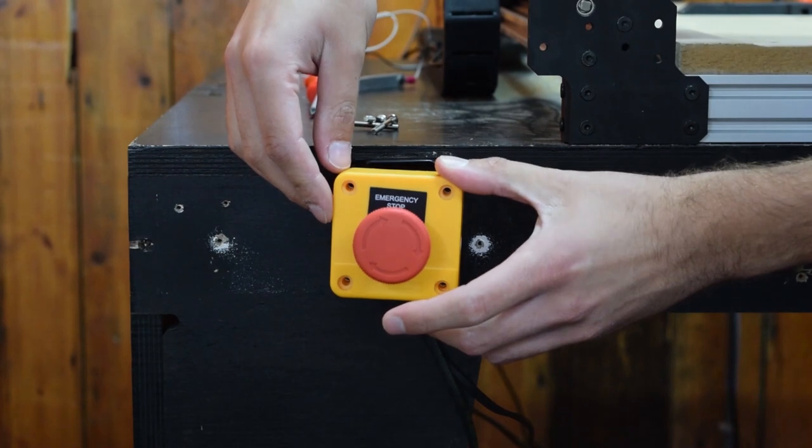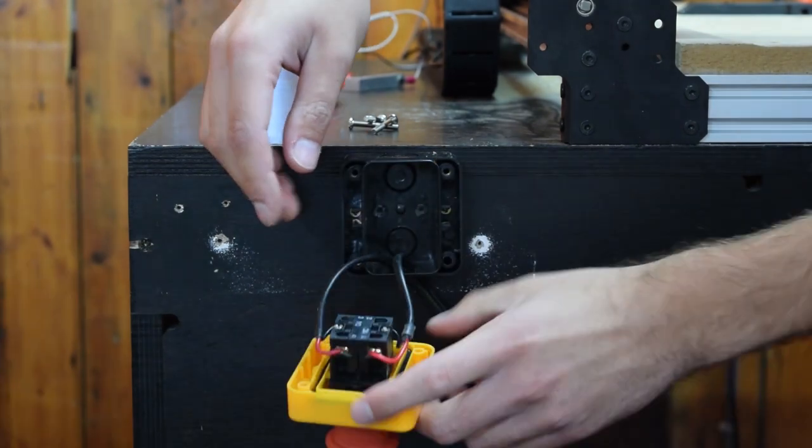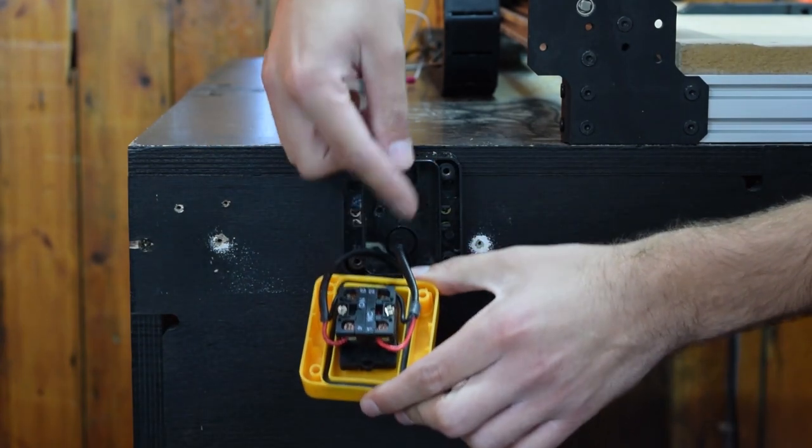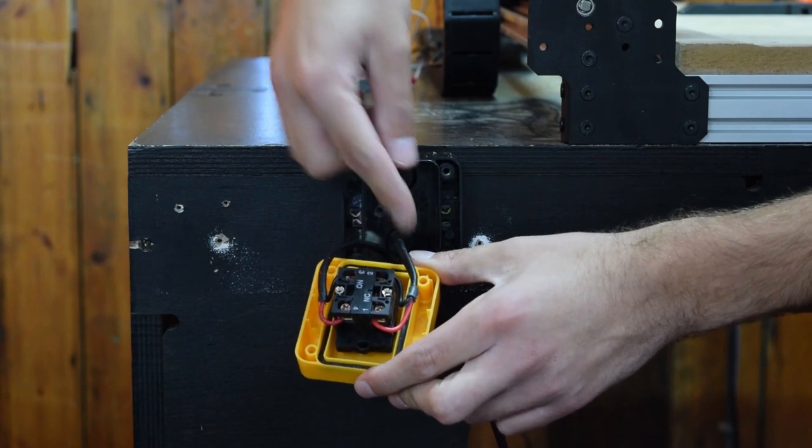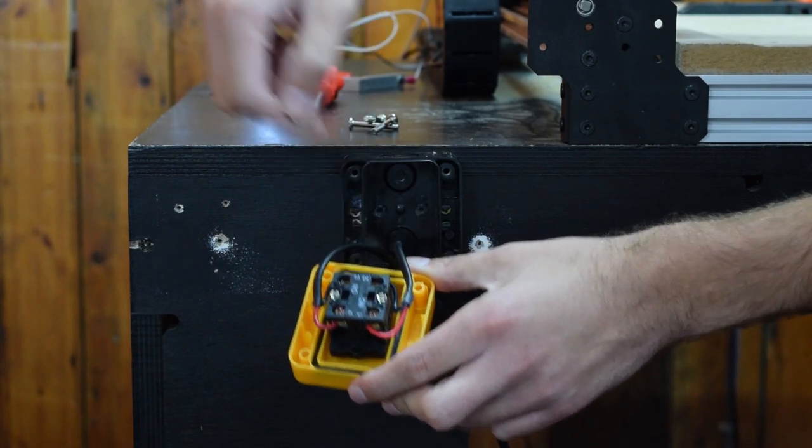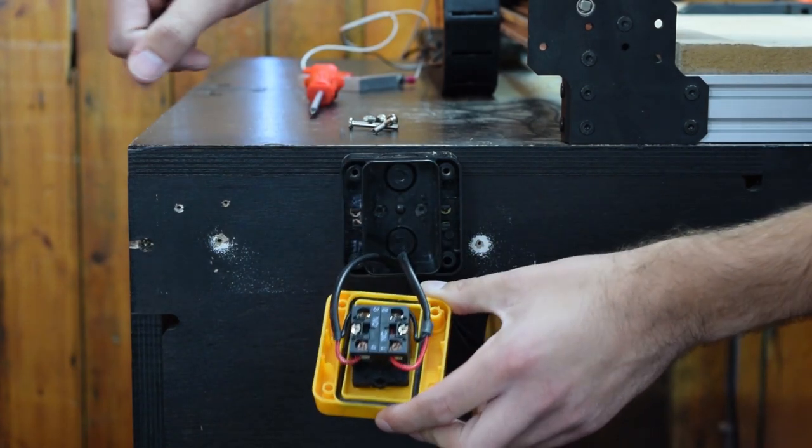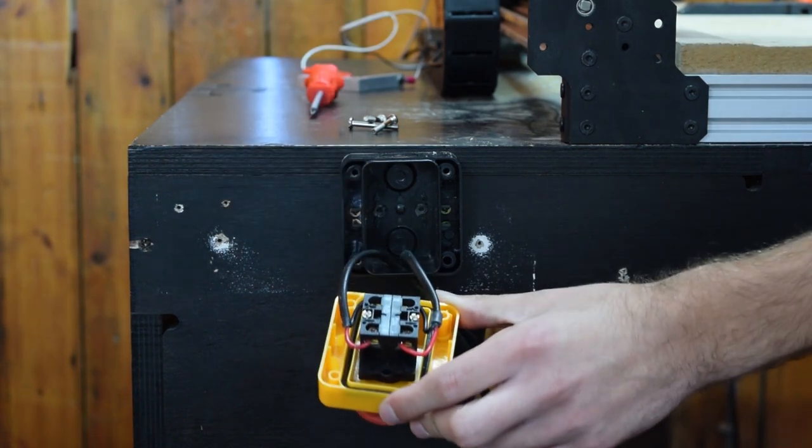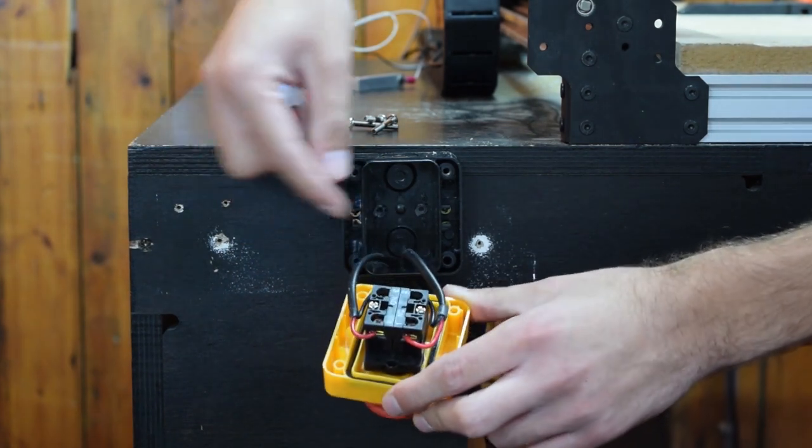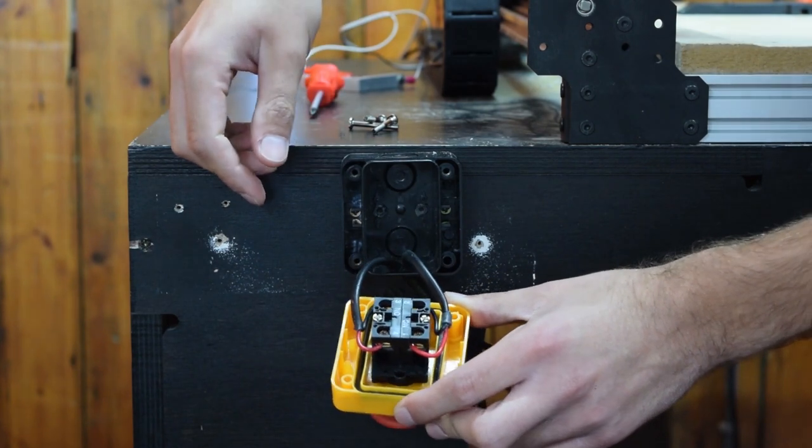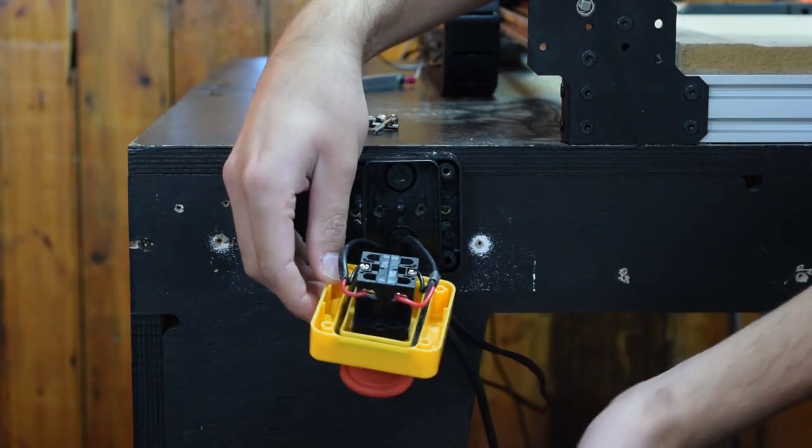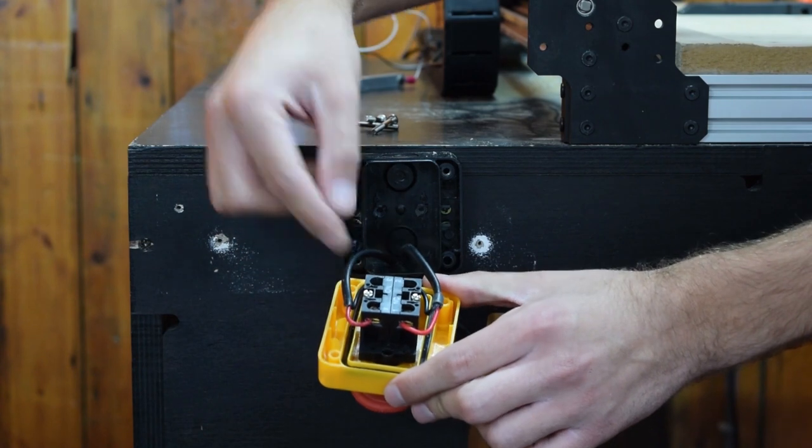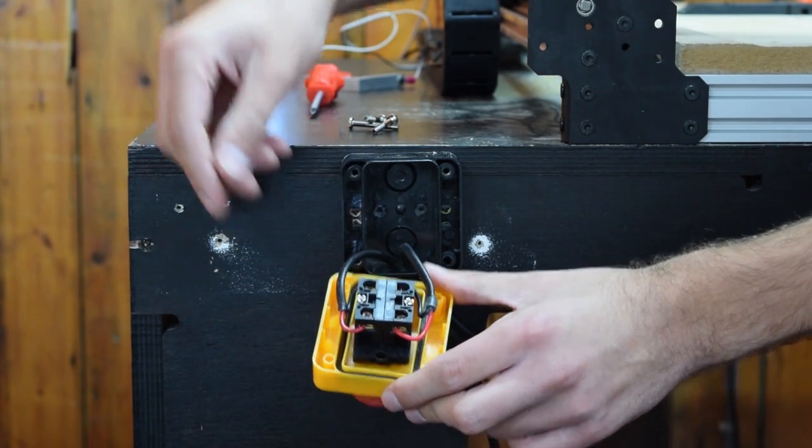So I took the front off our emergency stop button here. And inside here you can see we have two terminal switches. One is normally open for our power interrupt. So this red wire here is coming from the positive output on our power supply. And this black wire here is going back to the positive input on the controller. When this button is hit, it interrupts the power and then kills the power to the controller.